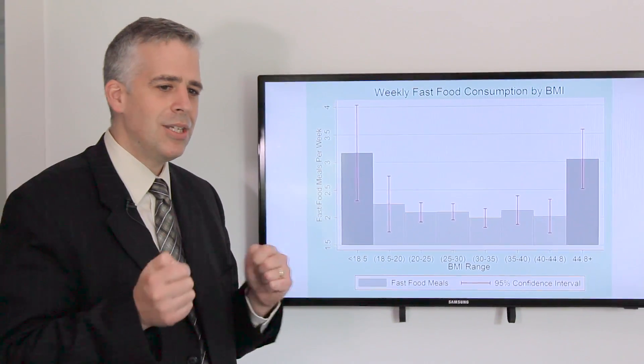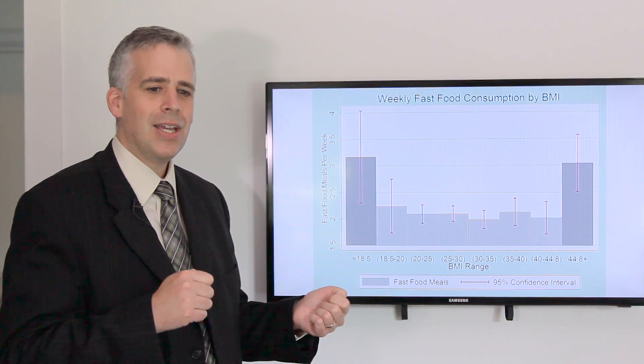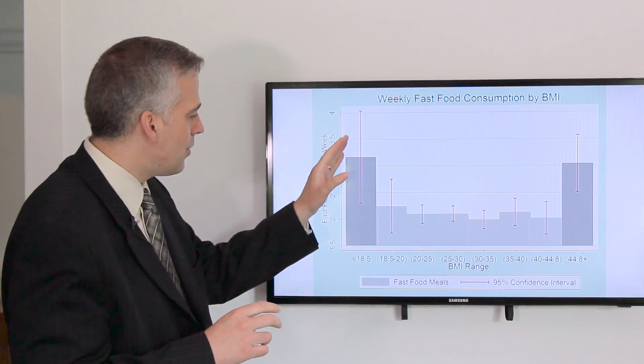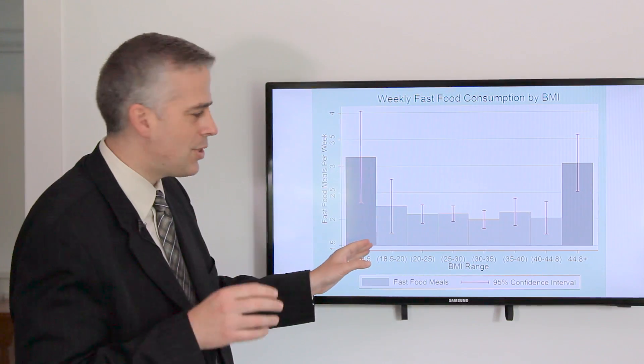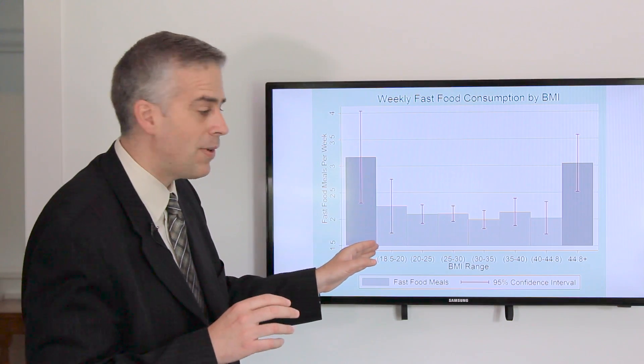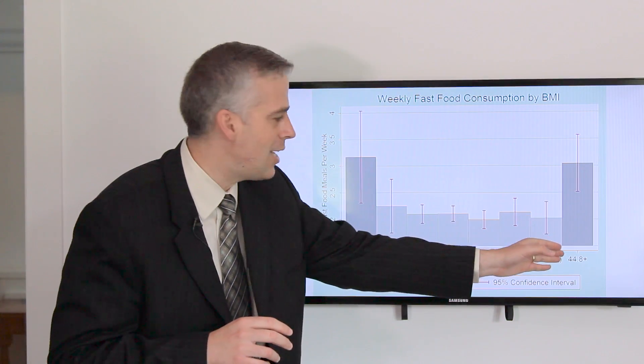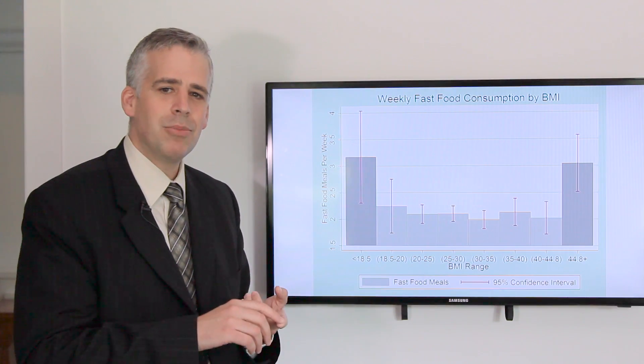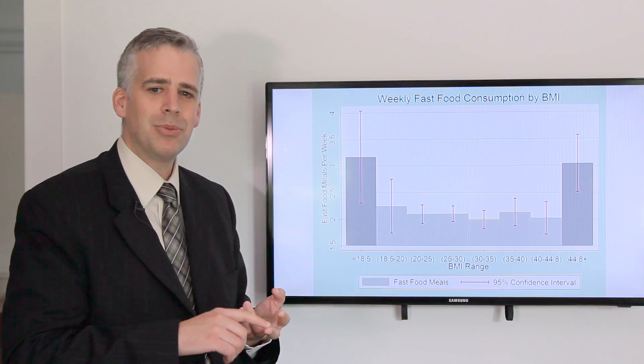In this graph, we see those between, for an average height American, about a weight of 125 pounds to 310 pounds—they're all consuming just about as much fast food. And we see the same relationship with soda and with candy.